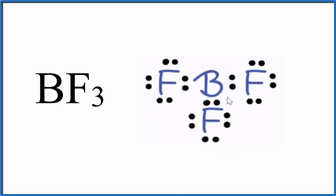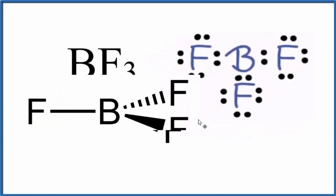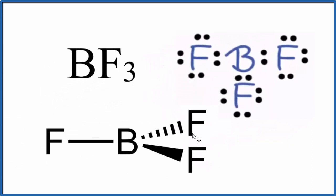The fluorine atoms are going to push away from each other to be as far away from each other as they can. That gives us what's called a trigonal planar molecular geometry, where the fluorines are spread out in a plane around the boron atom.